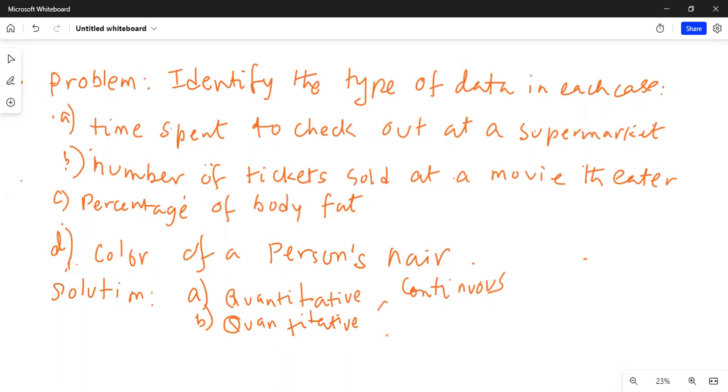tickets sold can be 100, 110, 105, 106, 107. Bottom line, you cannot sell decimal number of tickets. Like you cannot sell 105.5 tickets. You'll always sell whole numbers. So this is quantitative but discrete data.